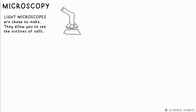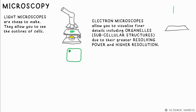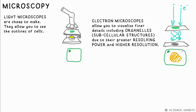All life consists of cells. We can see cells with a normal light microscope, and maybe the nucleus, but the subcellular structures won't really be visible. Using an electron microscope, however, allows us to see far finer details, so we can see an image of these organelles. As such, these microscopes have a better resolving power and a higher resolution.